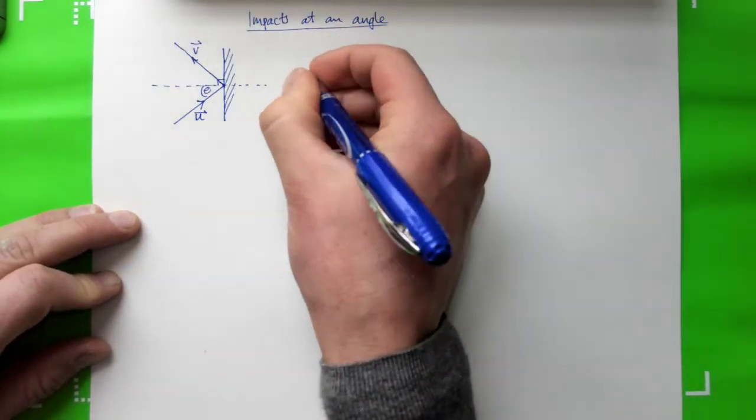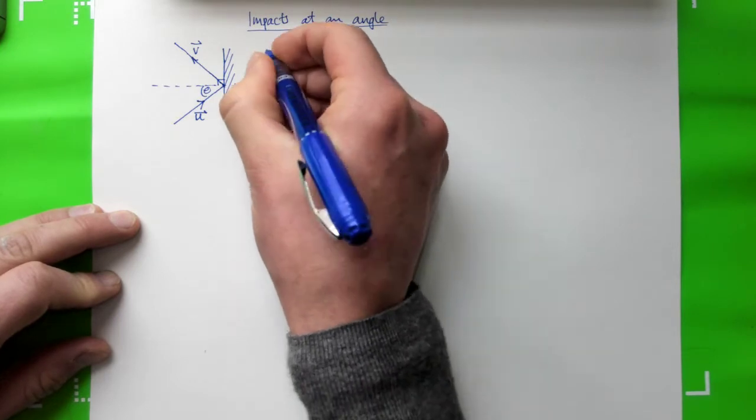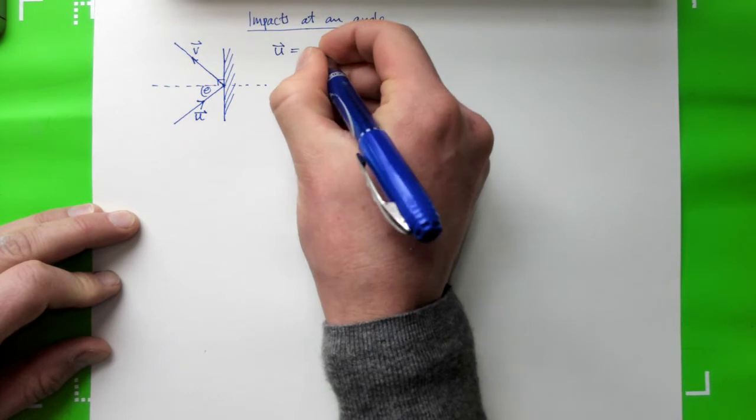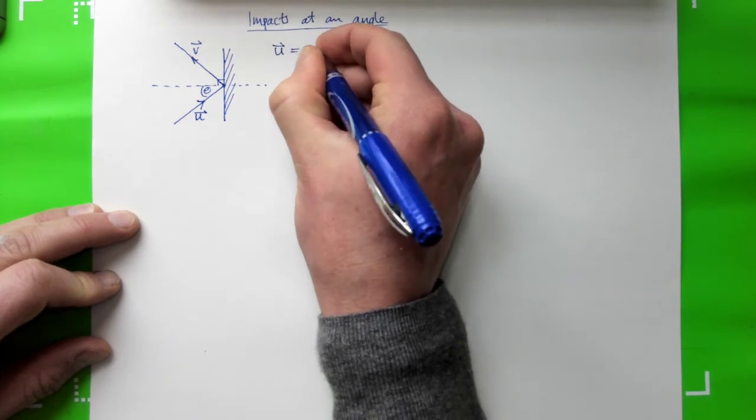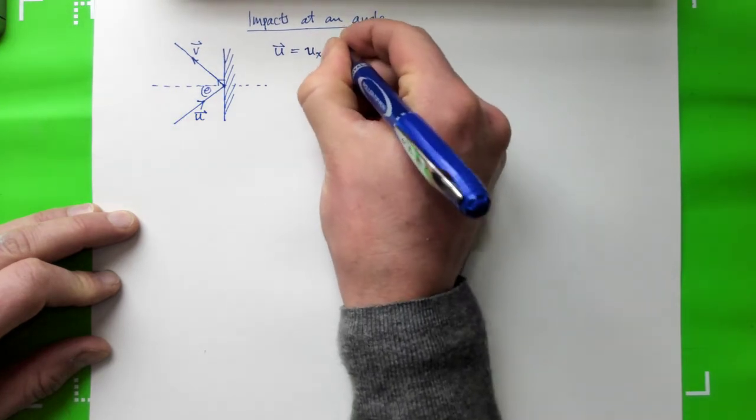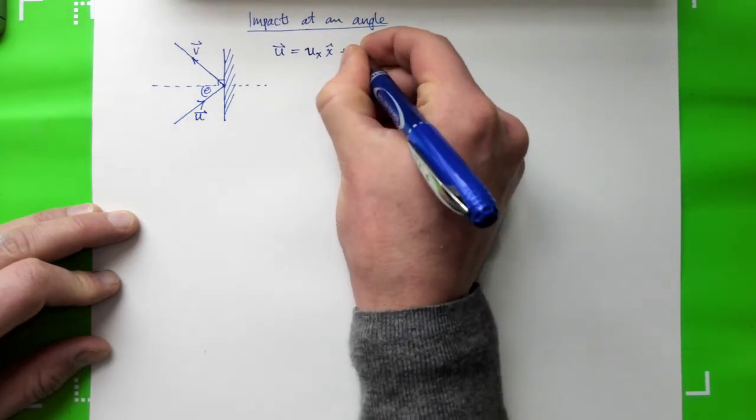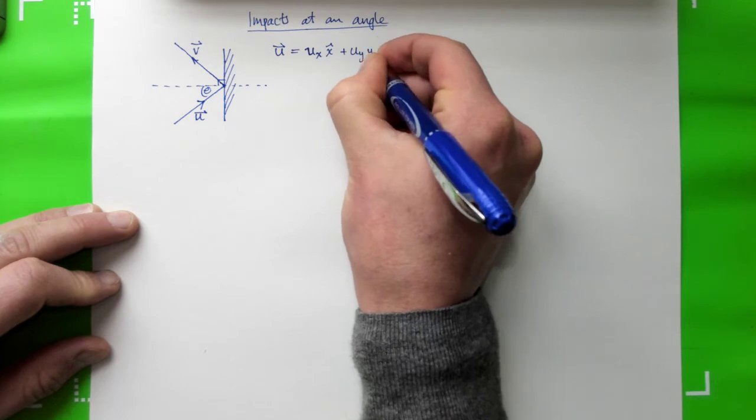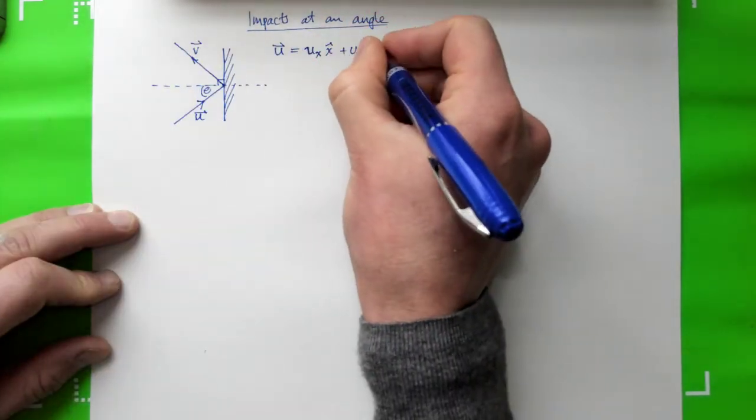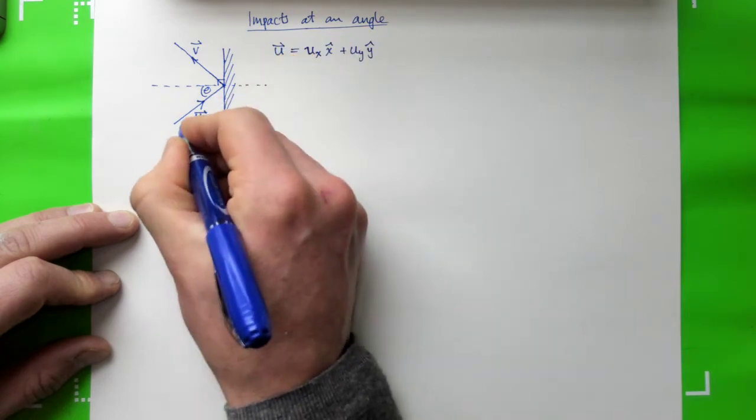So let's just write it down as vectors. So U, the initial velocity vector, has components in the x-direction, let's call it Ux, if you want to stick with this vector notation, plus Uy y-hat, and that's our velocity before the collision.